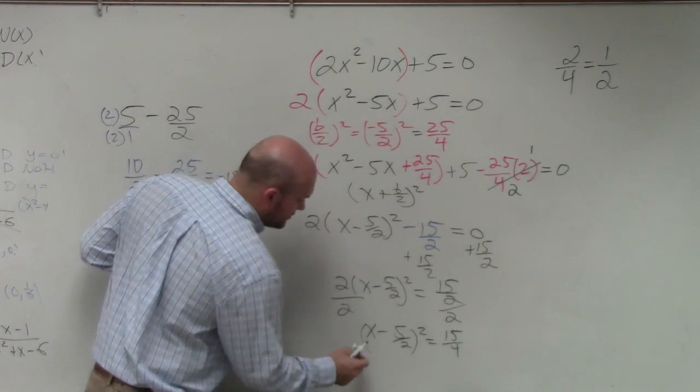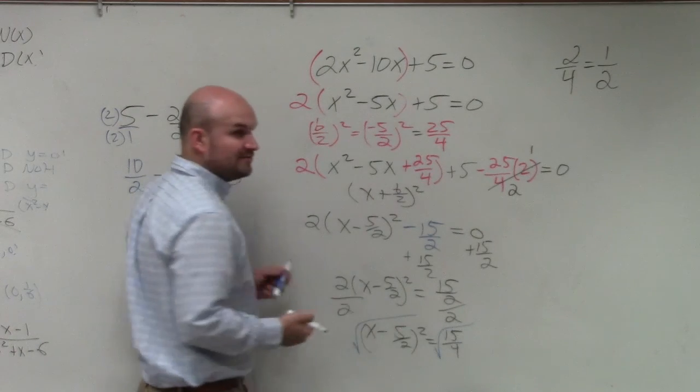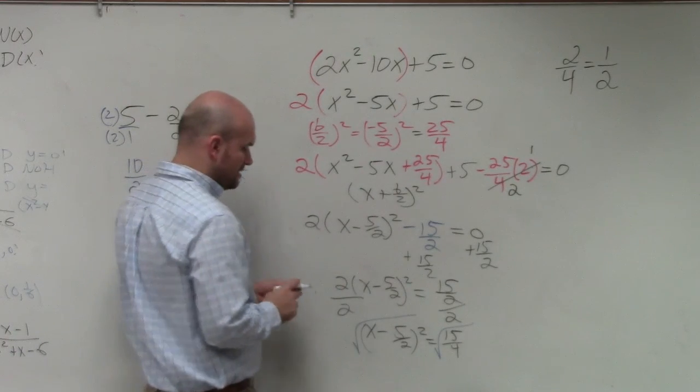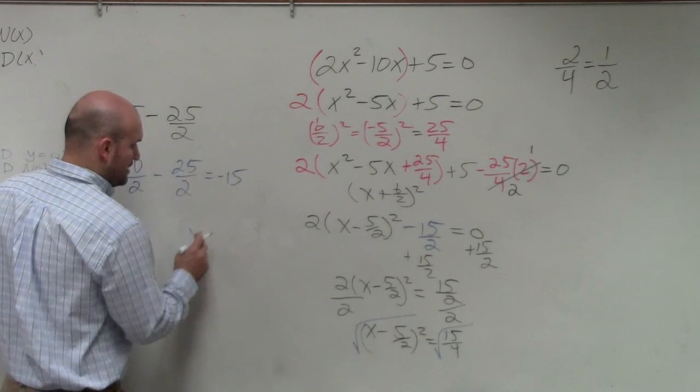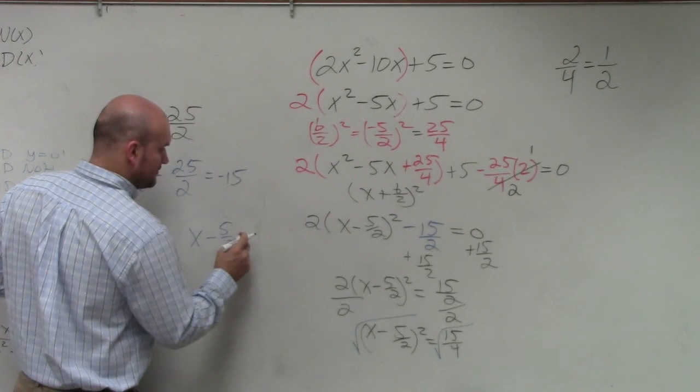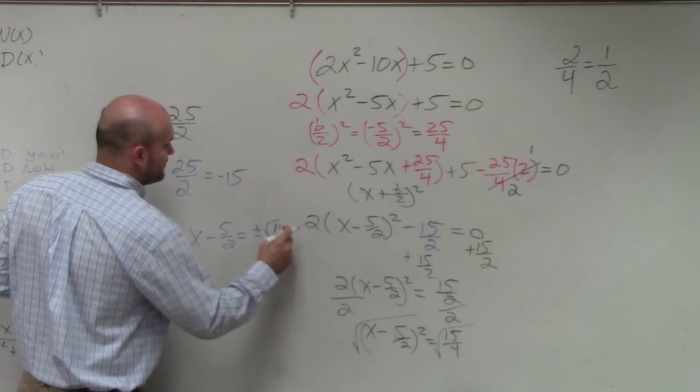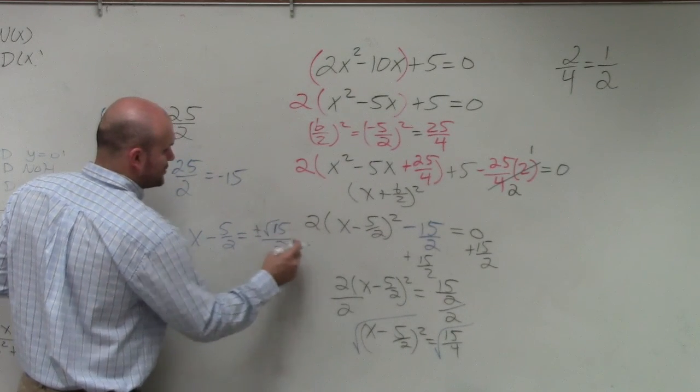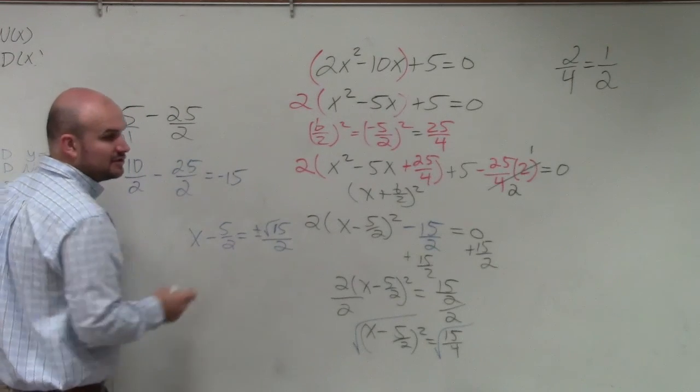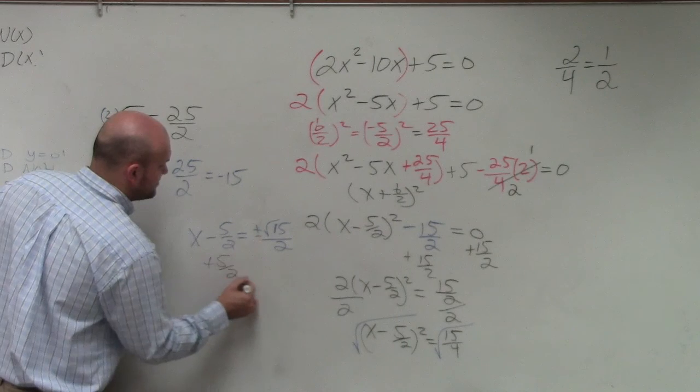Now, to undo the square root, take the square root. Take the square root. I can't take the square root of 15, but I can take the square root of 4. So I end up with x minus 5 halves equals plus or minus the square root of 15 over 2. Remember, whenever you introduce a square root, you have to include plus or minus.